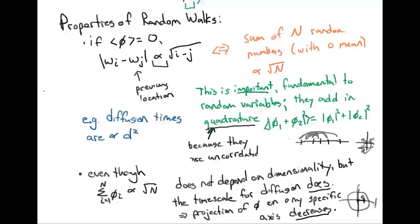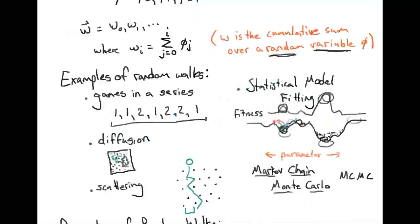These are probably the two most important properties of random walks: the fact that they grow as root n and the fact that the efficiency with which you explore a space goes down with dimensionality. If you keep these things in mind, you'll discover that random walks are very useful tools for understanding a wide range of situations, ranging from diffusion and scattering to model fitting and even to sports.